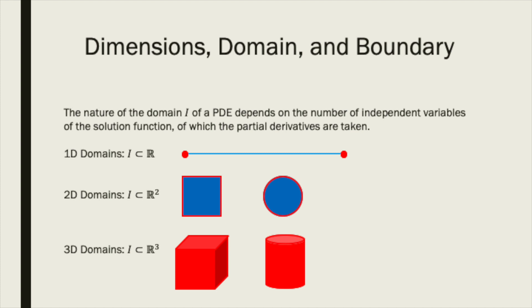For PDEs with three independent variables, the problem domain will be some subset of 3D space. The cube and the cylinder shown here are just two examples. The boundaries of these volumes will therefore be some surface oriented in 3D space. In these examples, the boundary of the cube is the surface made up of the combined planar faces, and the boundary of the cylinder is its two circular faces and the outer sleeve.